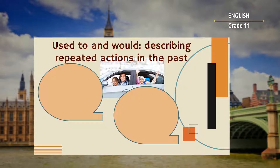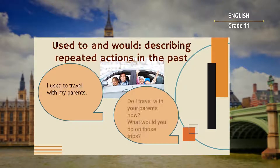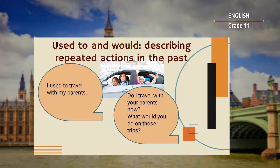We can also talk about our past habits with 'used to' and 'would'. Here is the conversation: 'I used to travel with my parents.' 'Do you travel with your parents now?' 'What would you do on those trips?' 'Used to' describes past actions and habits. When we use 'used to', we suggest that the action is no longer true and so make a strong contrast with the present. 'Would' is used to describe a person's typical activities in the past. It can only be used to describe repeated actions, not states.